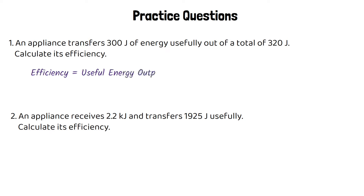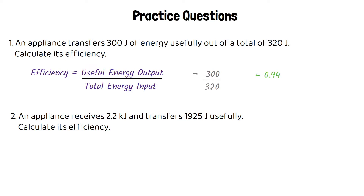We use the same equation: efficiency equals useful energy output over total energy input. In this question our useful energy output is 300 and our total energy input is 320. We do 300 over 320, which gives us 0.94. As a percentage, that's 94%.